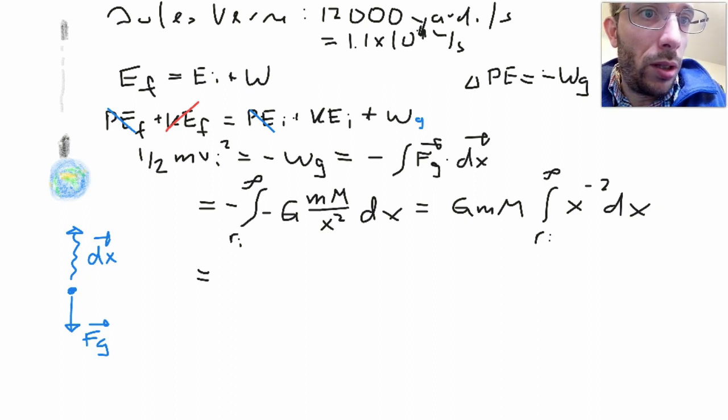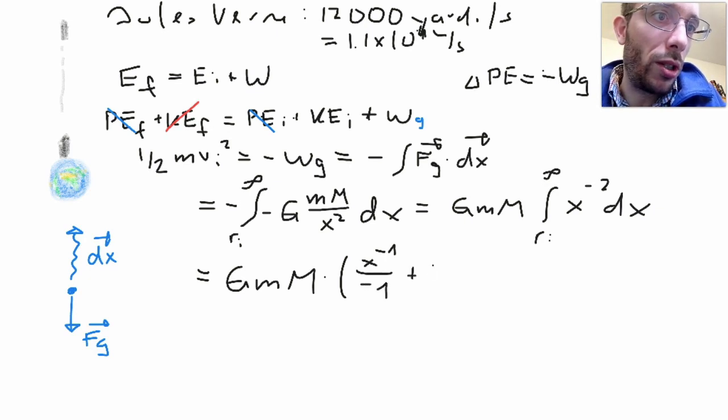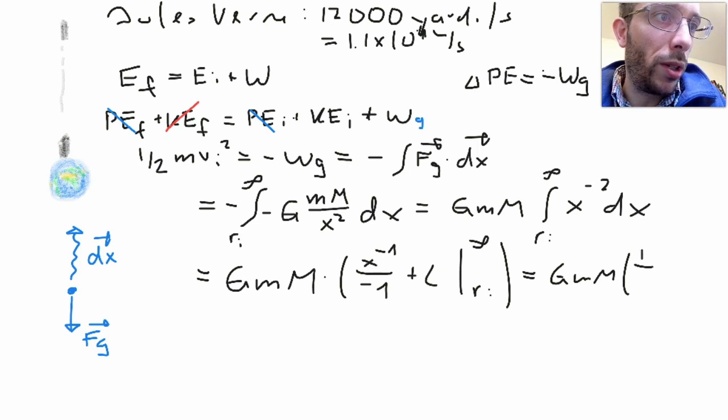This gives me G times mass times mass times x to the power of minus 1 over minus 1, plus integration constant, evaluated from r initial to infinity, which gives me G m m, 1 over infinity minus 1 over infinity minus 1 over infinity plus 1 over r initial.